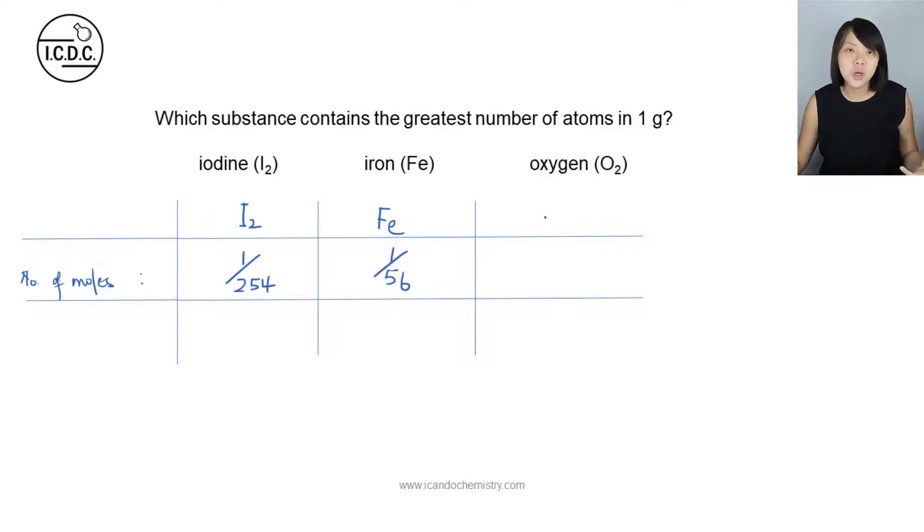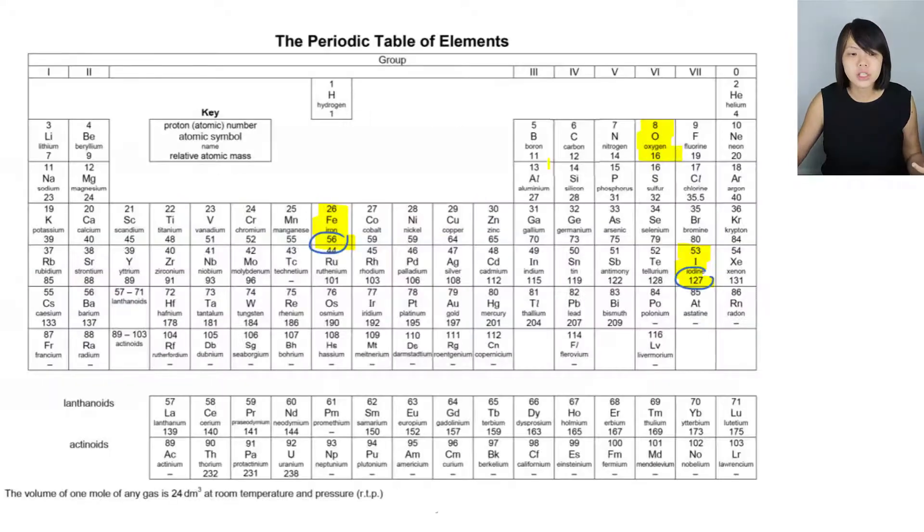Now oxygen, many of us will know that molecular formula is actually O2. Oxygen exists as a molecule. Two oxygen atoms covalently bonded and each of them attain the stable noble gas electronic configuration. So to determine the number of moles of oxygen, we will need to use the mass, which is 1, divided by the molar mass.